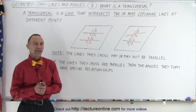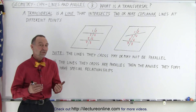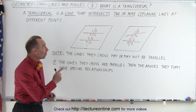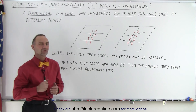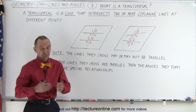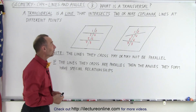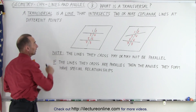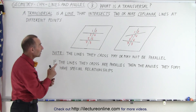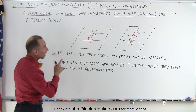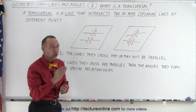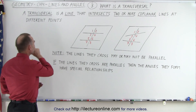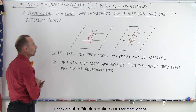Welcome to Electron Line. In this video, we're going to explore what a transversal is. A transversal is a line that intersects two or more coplanar lines at different points.